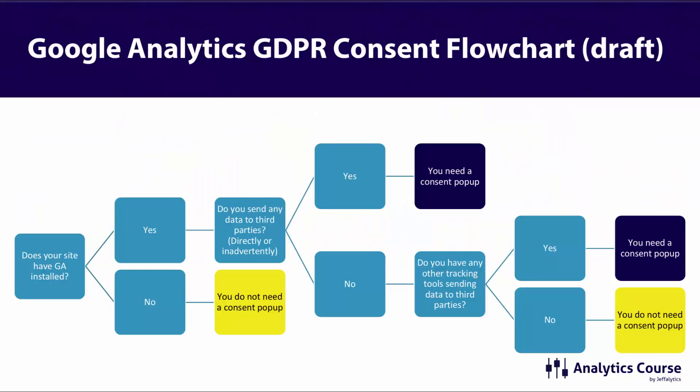Here's my draft of a Google Analytics GDPR consent flowchart. First question: does your site have Google Analytics installed? If no, you don't need a consent pop-up — obviously. If yes, do you send your data to third parties, either directly or indirectly? If yes, you need a consent pop-up. If no, the next question is: do you have any other tracking tools sending data to third parties — like DoubleClick, share buttons, or anything sending data to a third-party website? If you're a publisher, the answer is probably yes and you do need a consent pop-up. If you're only doing Google Analytics, the answer is no and you can get by without one.